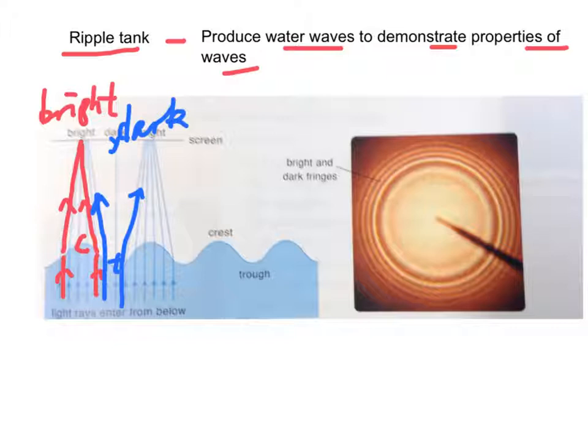For example, if we have a dropper releasing water drops into the water level, then you will see successive crests and successive troughs with bright and dark circles respectively.